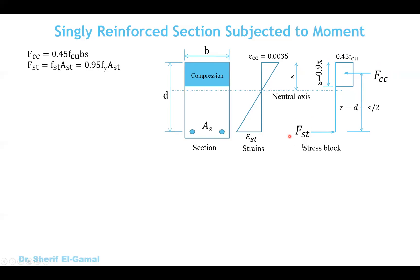The force in the tension steel equals the stress in the tension steel multiplied by the area of tension steel. Usually the stress equals 0.95 F yield because the section will be an under-reinforced section, as we learned in our previous video. Therefore, the steel is assumed to yield, and the maximum stress in the steel used is 0.95 F yield.